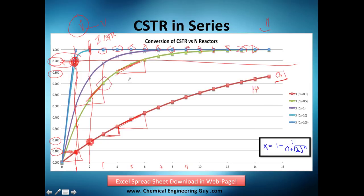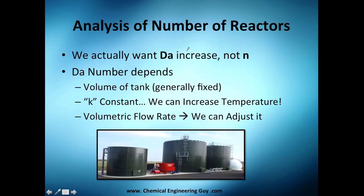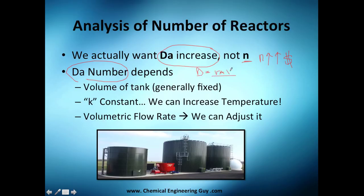For a poor Damköhler number, you might need 14 reactors and still have the same conversion as just 3 reactors with Da = 1.5. Hopefully you understand why we analyze the Damköhler number, why we use series arrangements, and why increasing Da improves conversion performance. We want to increase Da, not keep adding reactors — because more reactors means money to buy, install, maintain, and operate.